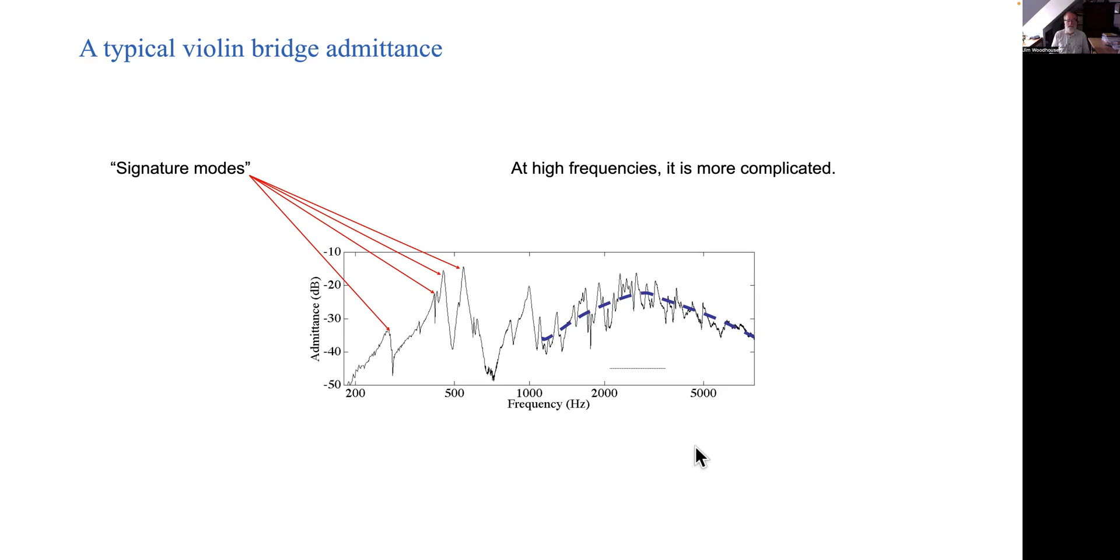Now as you go up in frequency you get more and more and more modes and on average for something like an instrument body the spacing of those will be roughly equal. You'll have roughly the same number of modes in each 500 hertz band shall we say. But the bandwidth due to damping doesn't stay the same.